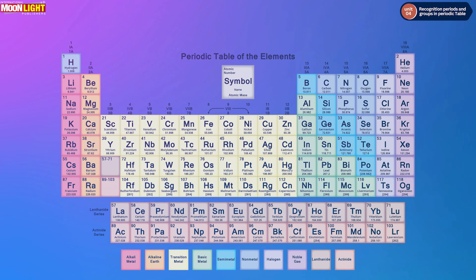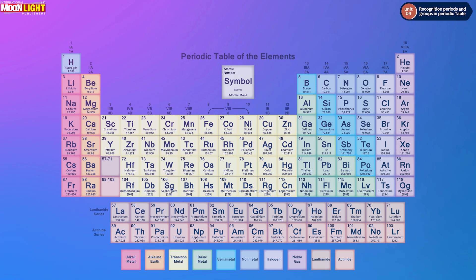Next is fluorine with atomic number 9. Then neon is 10. In the first period we have hydrogen and helium. In the second period we have lithium, beryllium, boron, carbon, nitrogen, oxygen, fluorine, and neon.